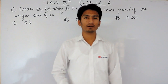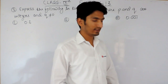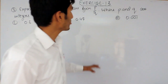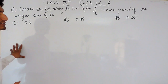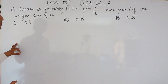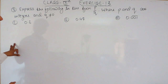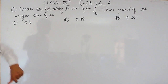Hello everyone, we are from True Maths and in this video we are going to solve the third question of Exercise 1.3. The question says: express the following in the form of p upon q, where p and q are integers and q should not be equal to 0.